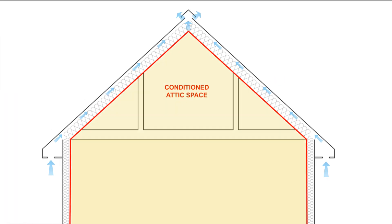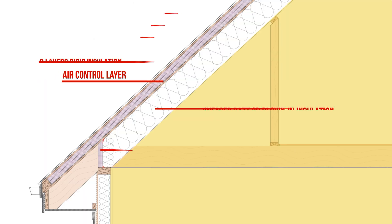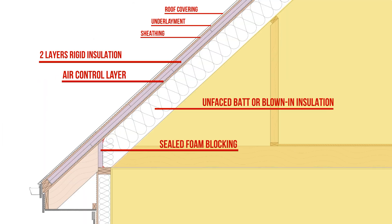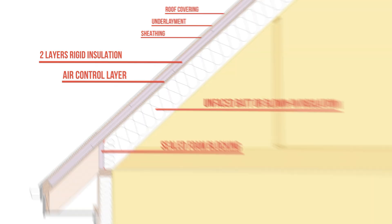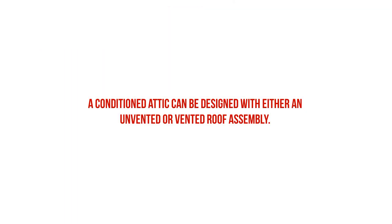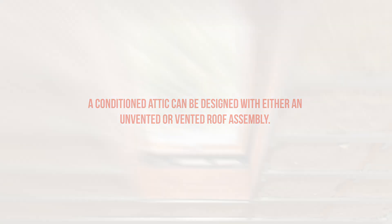If the backside of the roof sheathing is vented, then it's a vented roof assembly. If the roof assembly is closed off and does not allow for any outside air flow, then it's an unvented roof assembly. You can have both an unvented and vented roof assembly with a conditioned attic space.